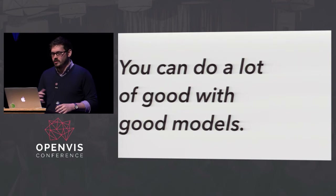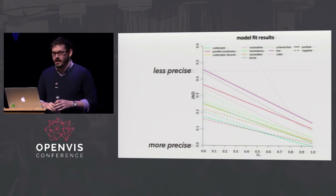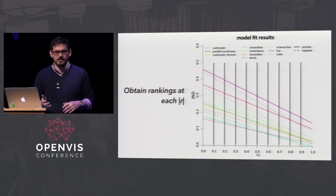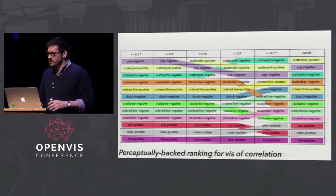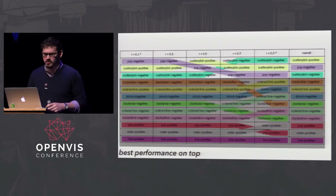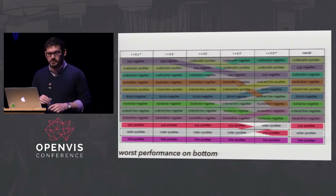One of the first things we did was produce a perceptually backed ranking of precision for judging correlation. With these validated lines we can make design decisions, though it's a bit messy. We simplified by obtaining rankings at each value of R and produced what we call a noodle chart. Best performance is on top: parallel coordinates plots showing negative data and scatter plots are among the top performers. Worst performance on the bottom: parallel coordinates plots showing positive data, and you really want to stay away from a line chart showing positive data - that turned out to be the worst overall.